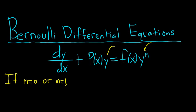So if n is equal to 0 or n is equal to 1 the result is linear — piece of cake, we can solve it, no big deal.